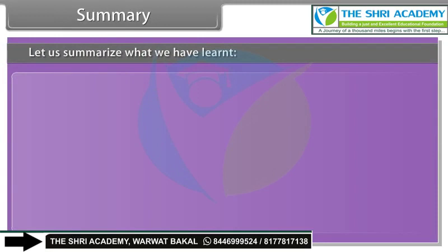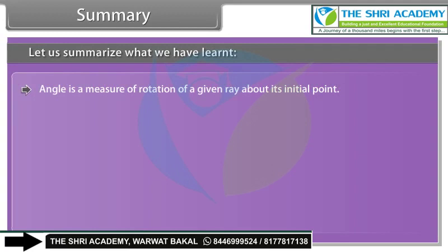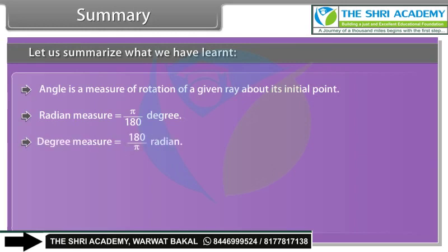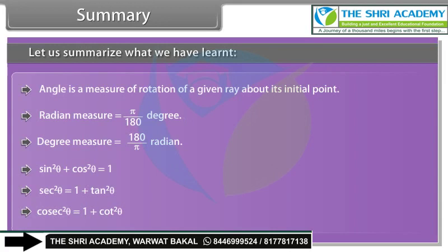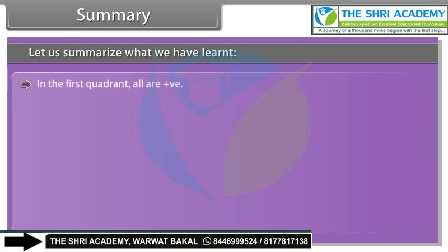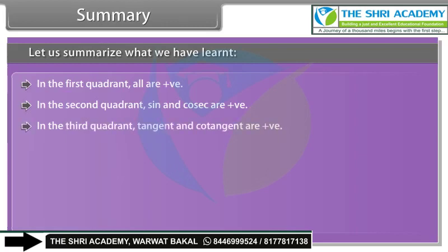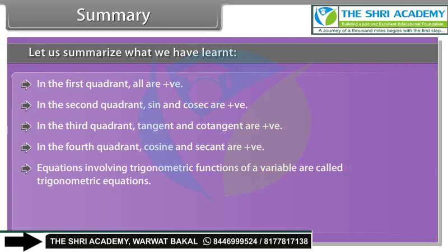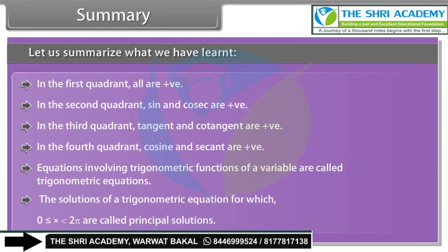Summary: An angle is a measure of rotation of a given ray about its initial point. Radian measure equals π/180 × degree measure; degree measure equals 180/π × radian measure. sin²θ + cos²θ = 1; sec²θ = 1 + tan²θ; cosec²θ = 1 + cot²θ. In the first quadrant all are positive; in the second sine and cosec are positive; in the third tangent and cotangent are positive; in the fourth cosine and sec are positive. Equations involving trigonometric functions are called trigonometric equations; solutions for 0 ≤ x < 2π are called principal solutions.